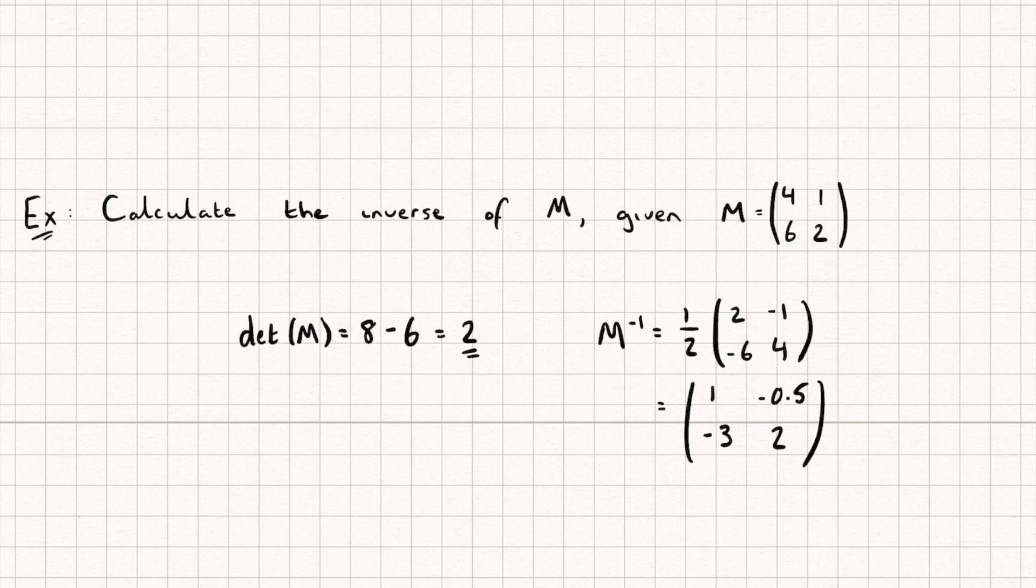And what we could do is multiply this matrix we've just found by M, and check that we get the identity matrix, and if we do, we know we've done it correct, and we've got the inverse.